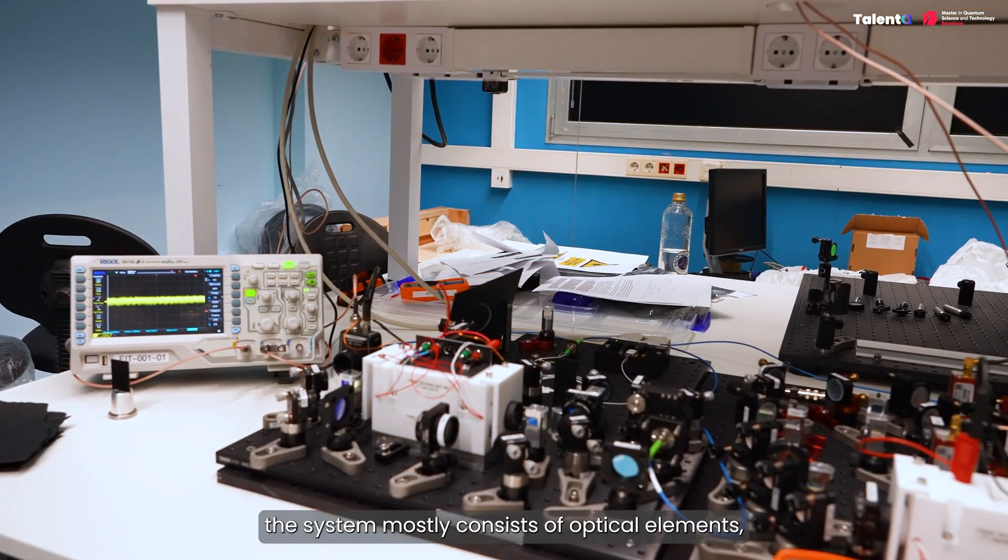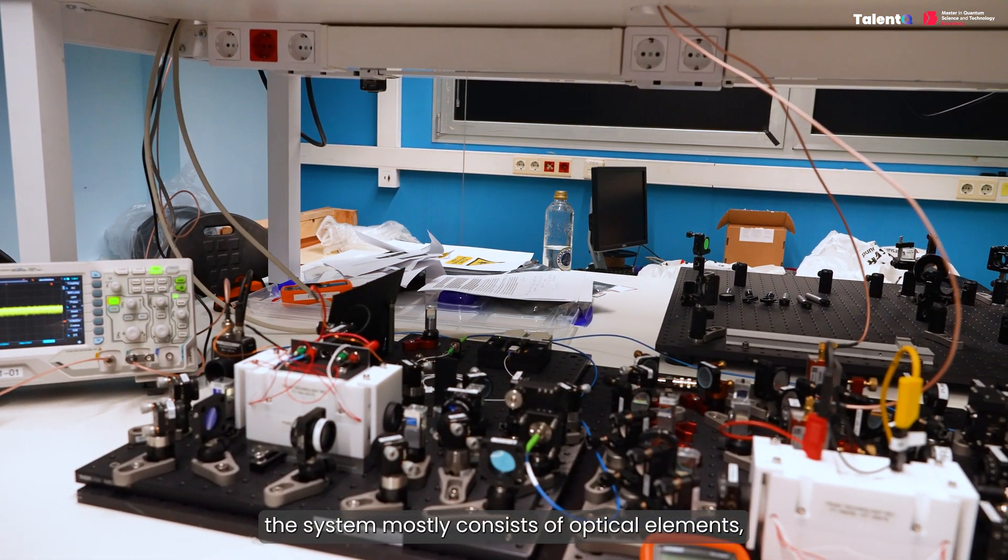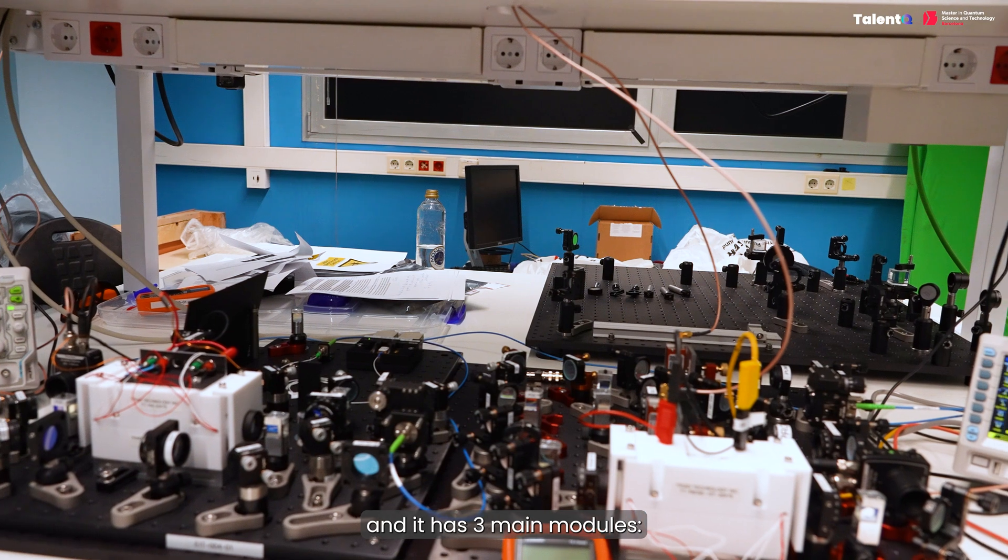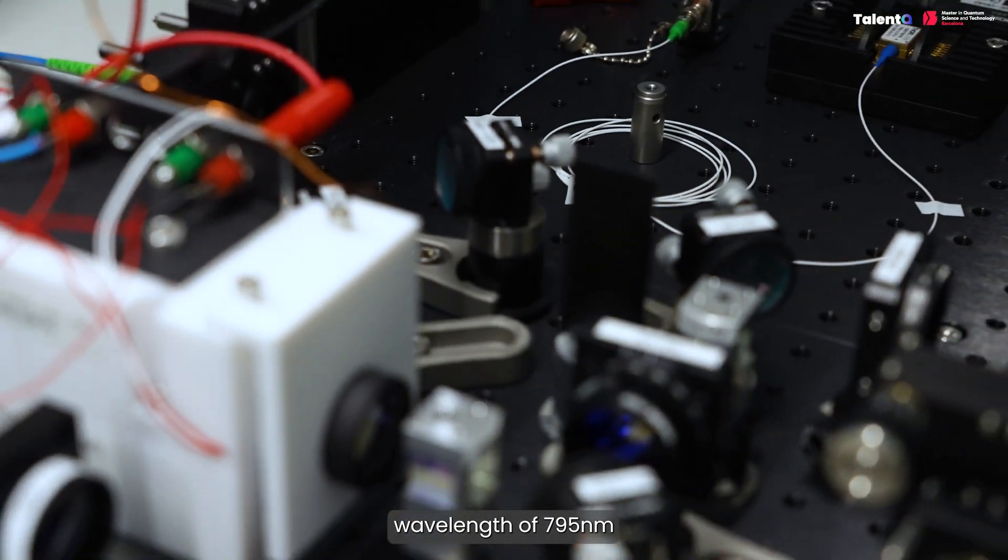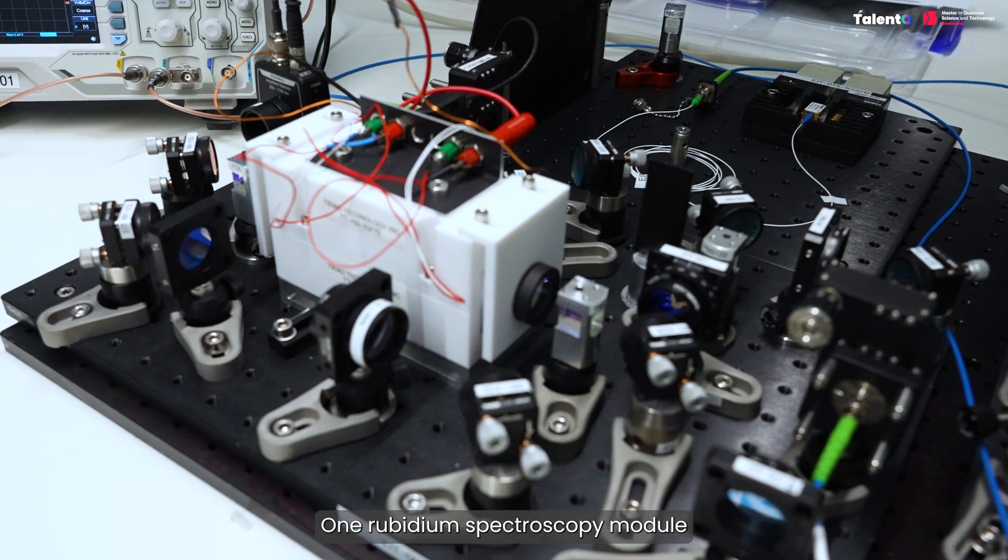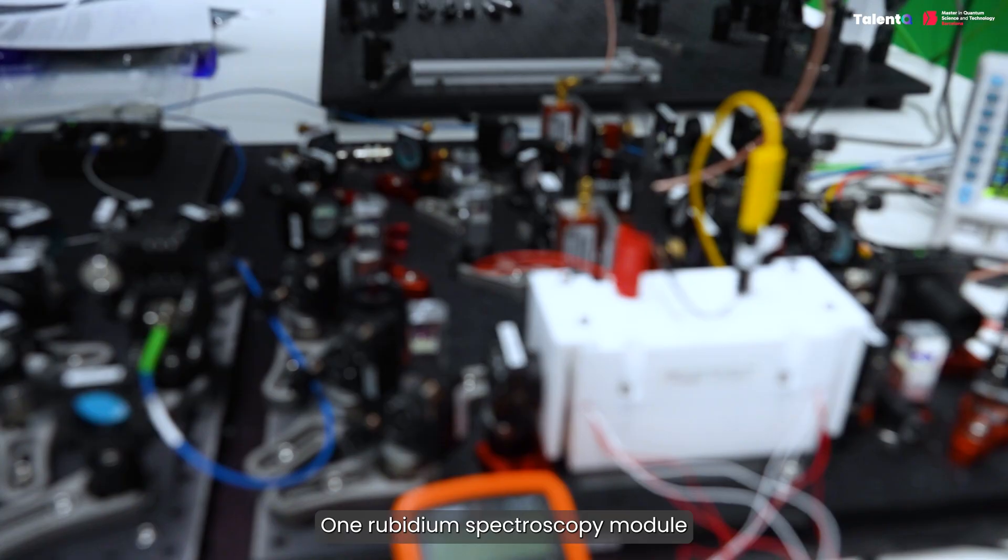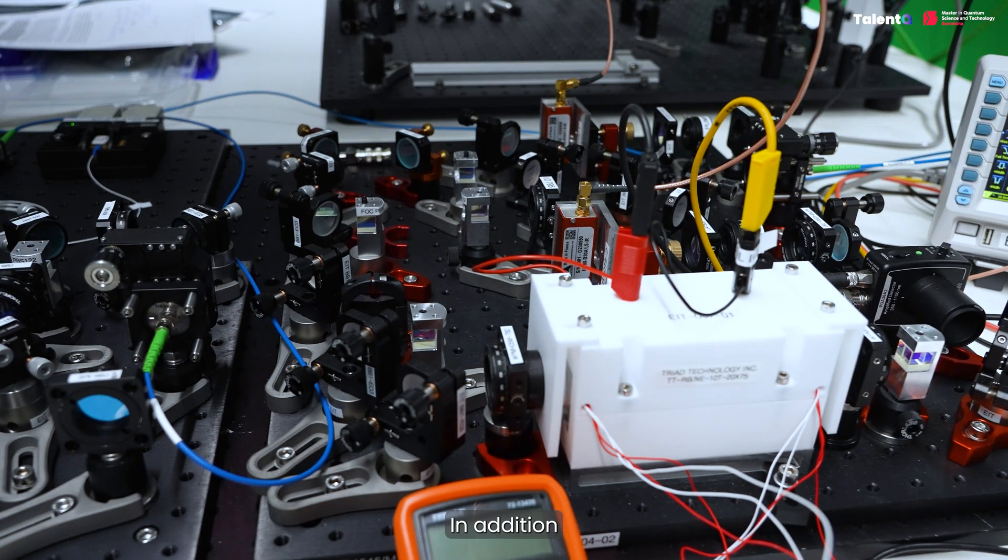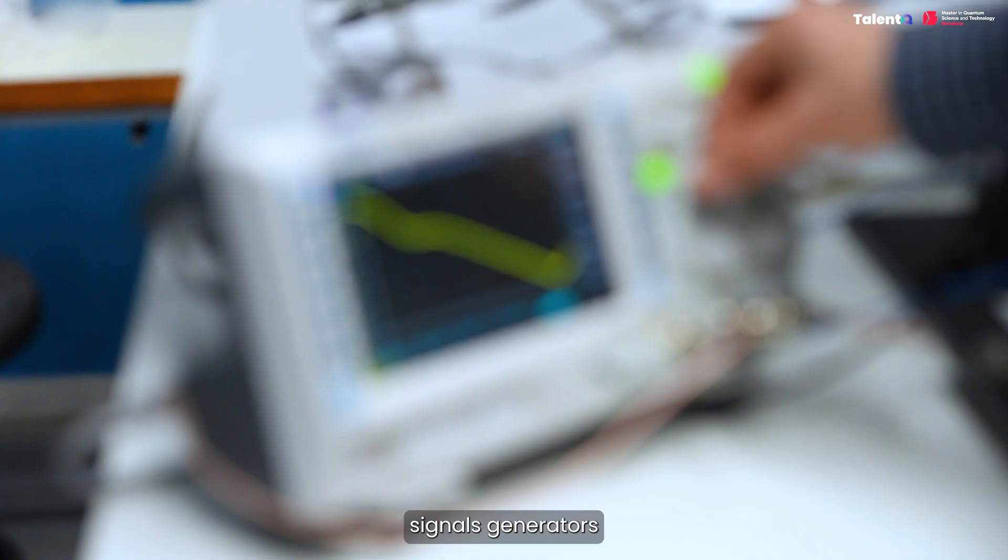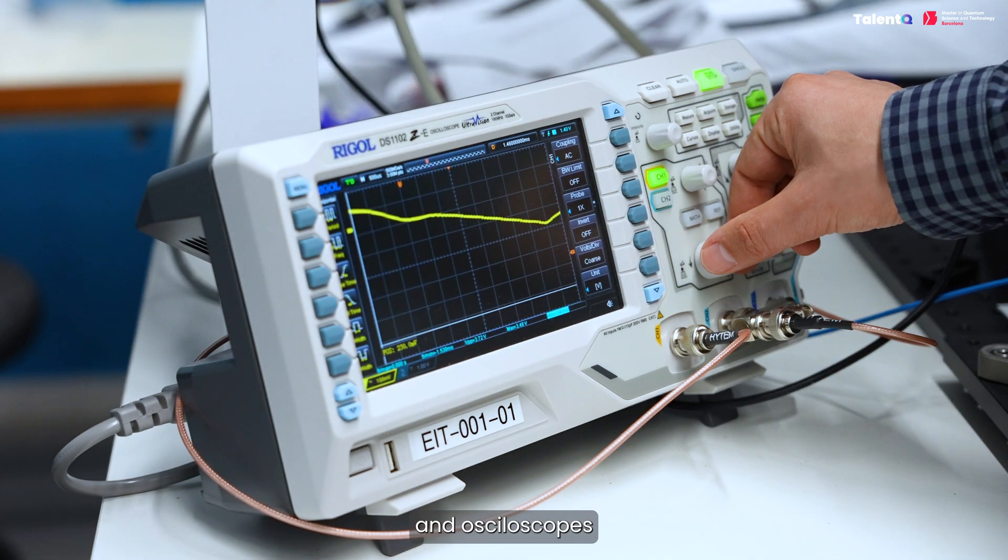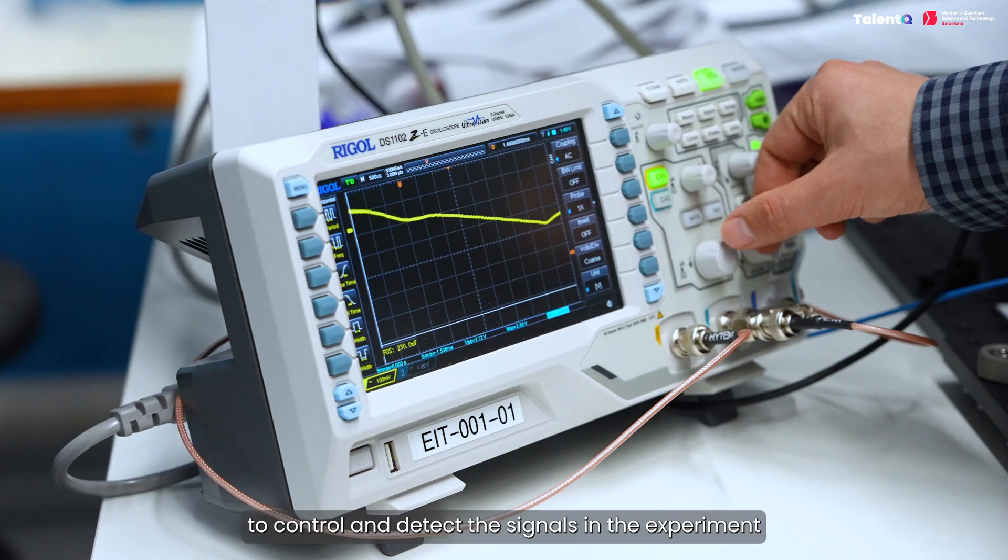As we can see, the system mostly consists of optical elements and it has three main modules: an infrared laser source at a wavelength of 795 nanometers, one Rubidium spectroscopy module and one Rubidium EIT module. In addition, we have quite some electronic devices, mostly power supplies, signal generators and oscilloscopes, to control and detect the signals in the experiment.